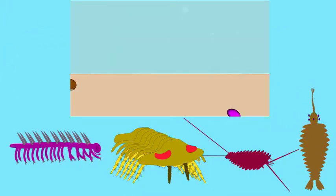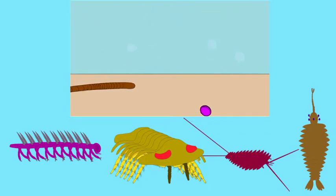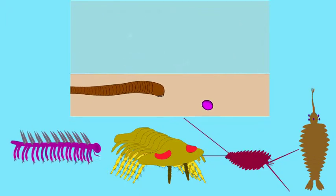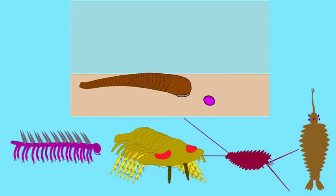The Cambrian period has seen a lot of worms, including some advanced coelomate worms. Here we see one hunting, but it's not very efficient. So you're going to see a fumble. It's going to fumble this opportunity to eat a cnidarian.